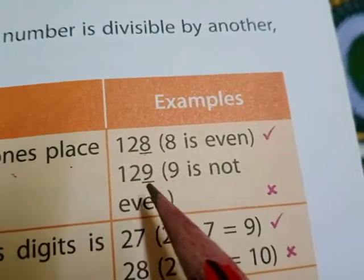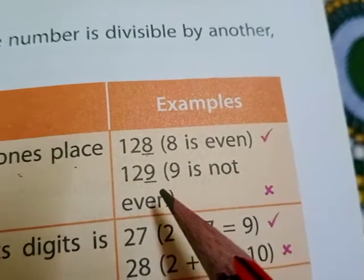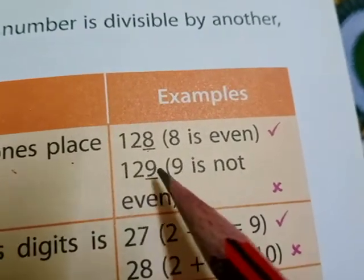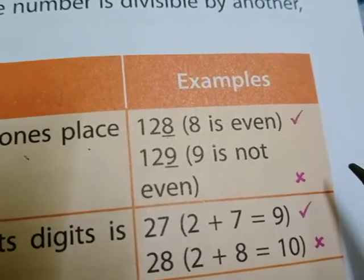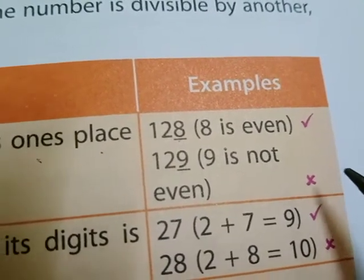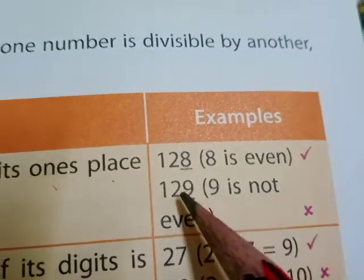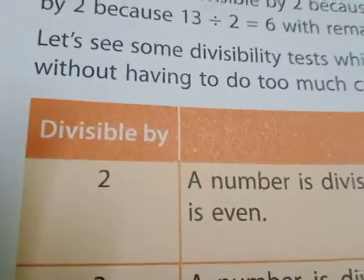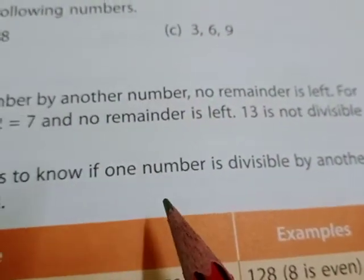Now look at 129. The digit nine is in the one's place. Nine is not an even number, therefore 129 is not divisible by two.